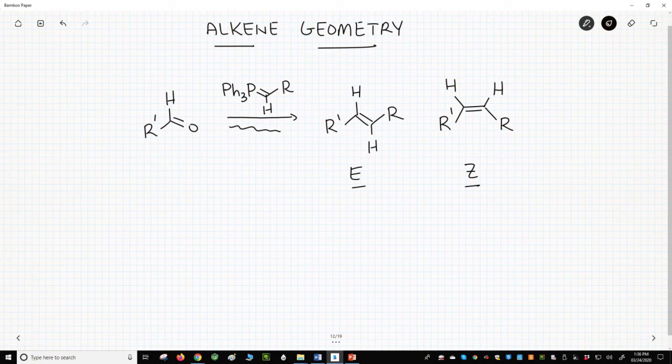Looking at these two products, you might expect the E alkene to be favored because the Z alkene is less stable due to steric effects. This is reasonable logic, but the stability of the alkene does not control the outcome. What does control the alkene geometry is the identity of the Wittig reagent. Let's see how this works.